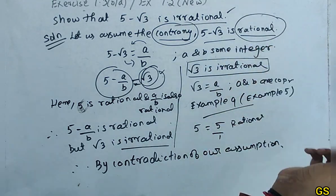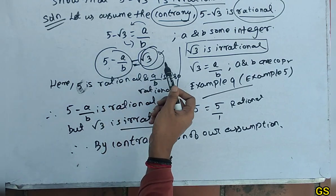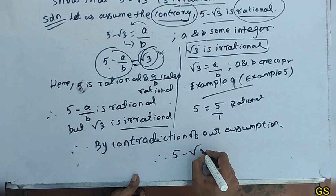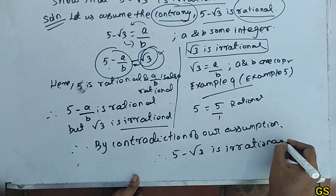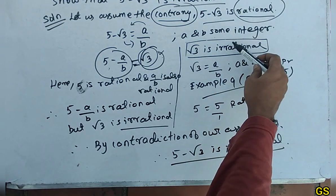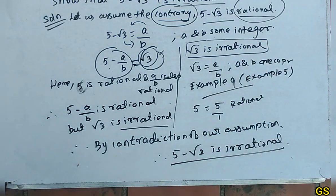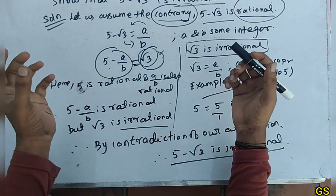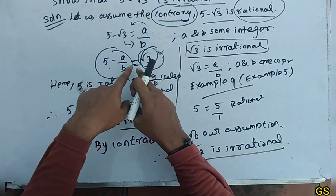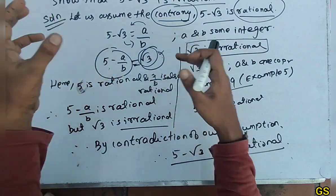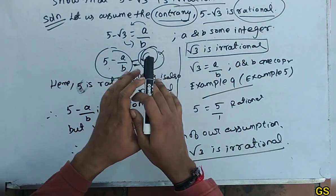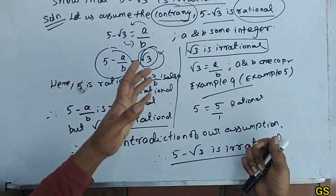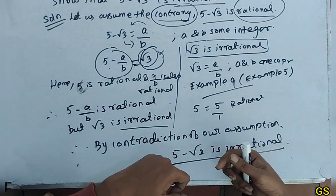So 5-√3 is irrational — that is the answer. Our assumption that 5-√3 is rational leads to √3 being rational, which contradicts the known fact that √3 is irrational. Therefore, the assumption is false, and the rational statement will be false. So 5-√3 is irrational.